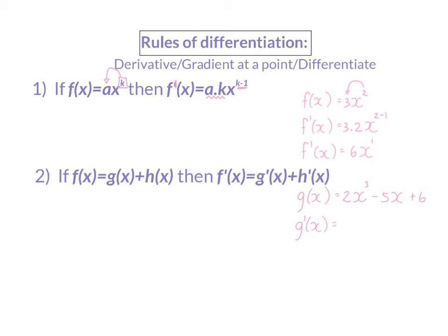For my derivative, I am going to start off taking the exponent of 3 and multiplying in front. 2 times 3 will give me 6, and in the exponent, 3 minus 1 will give me an exponent of 2. For my second term, the exponent is 1. If I multiply this 1 in front, I will have minus 5 times 1, and x to the power of 1 minus 1, which is 0, and x to the power of 0 is 1. In my third term, we have a constant value, so here we actually have an exponent of 0. When I take that 0 and multiply in front, I have 6 times 0, and that means the whole term becomes 0. So, my final derivative consists of 6x squared minus 5.